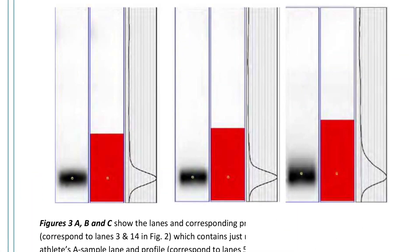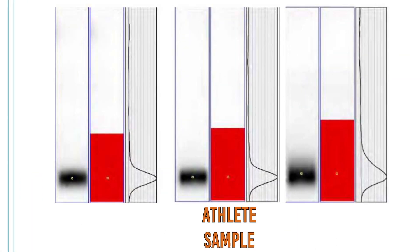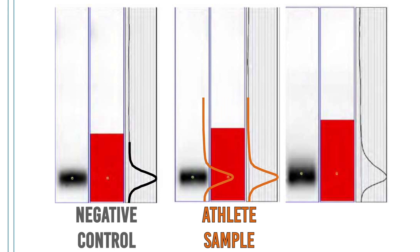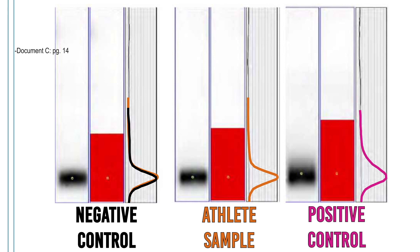Which two graphs are most similar? The athlete sample as compared to the negative control, or to the positive control?